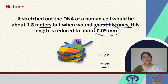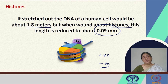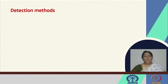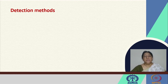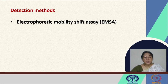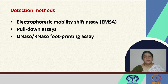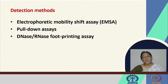The protein-nucleic acid interactions may be specific in nature, particularly when transcription or translation is involved — taking us from DNA to RNA to protein — or they can be non-specific in nature, depending on the specific mechanism involved. We now look at specific detection methods associated with protein nucleic acid complex formation. Common detection methods include the electrophoretic mobility shift assay (EMSA), pull-down assays, and DNA or RNA footprinting assays. In each of the three lectures in this module on protein nucleic acid interactions, we will be looking at one detection method.